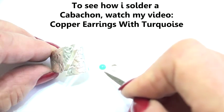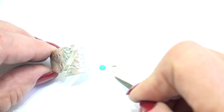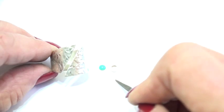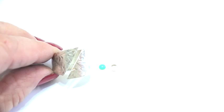This is the turquoise cabochon that I'll be using today. It's a 4 millimeter and then I'm going to just use a 4 millimeter bezel cup so I'm going to solder that right here and then set my stone.